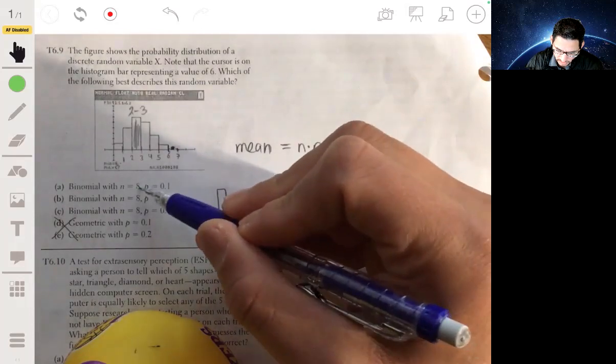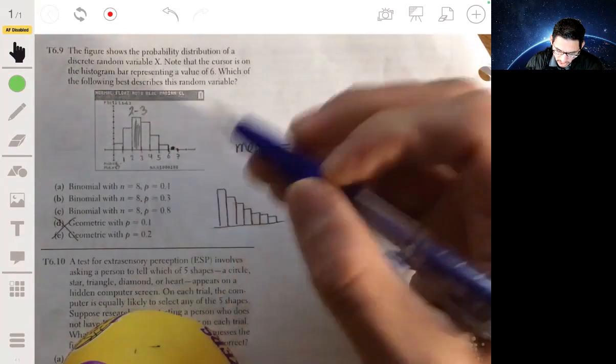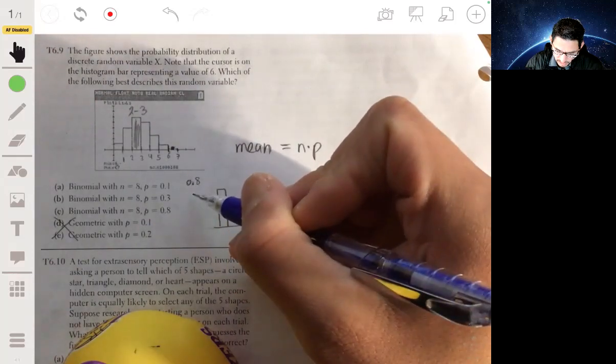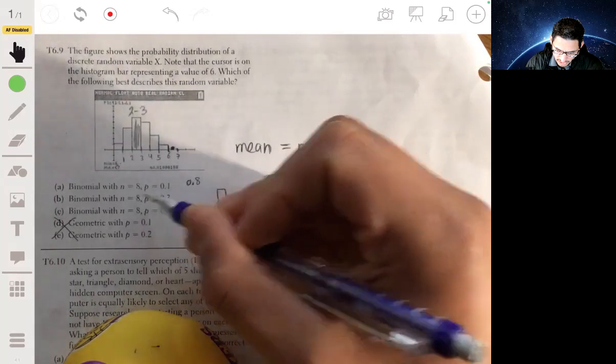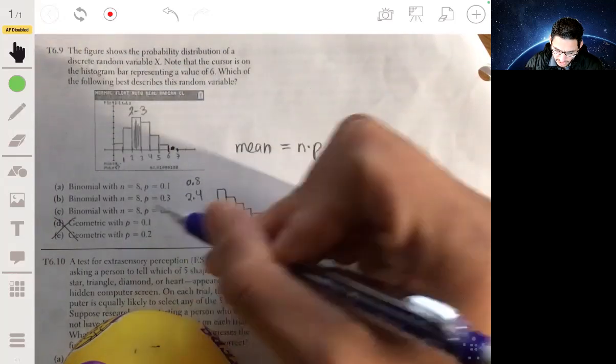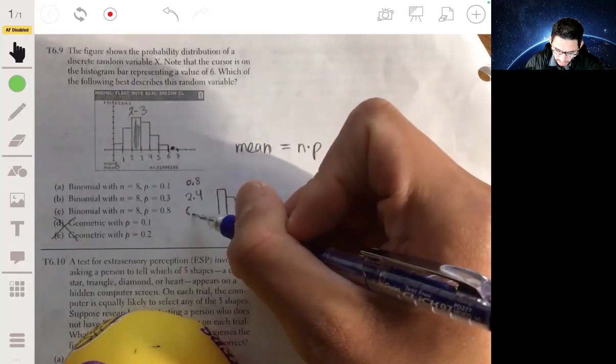So we take the mean of each of these. The first one would have a mean of eight times 0.1, so that's 0.8. The mean here will be eight times 0.3 or 2.4, and the mean here will be eight times 0.8 or 6.4.